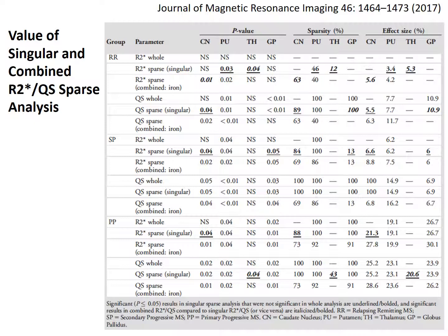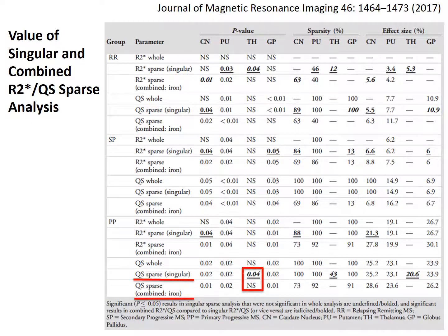When comparing the relapsing remitting MS caudate nucleus for combined structure analysis compared to the singular sparse analysis, we find that the combined analysis was significant when the singular analysis was not. The reverse effect was observed in the thalamus quantitative susceptibility of the primary progressive MS group, and this can be explained by the increased specificity offered by the combined use of R2-star and quantitative susceptibility.